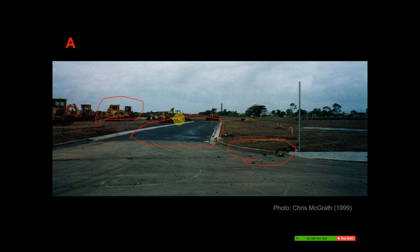The bitumen primer truck arrived to spray before the bitumen would come. The truck driver said to the foreman that he was a bit worried about the storm clouds around — it was the wet season with heavy storm clouds. The foreman said: no, we are behind schedule, go ahead and spray. So they started spraying the bitumen primer, and had been going for a little while when the heavens opened and it started pouring with rain.